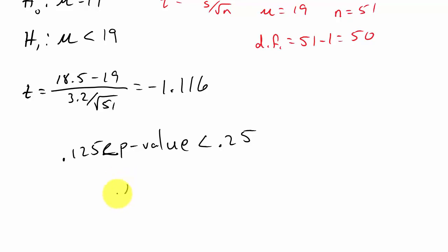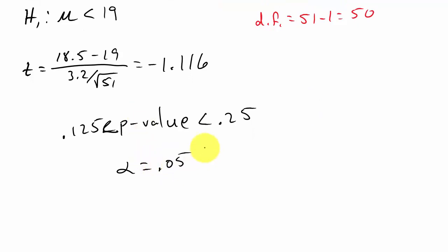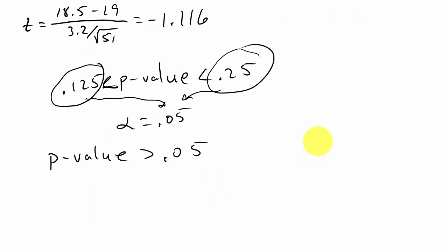Now our alpha equals 0.05. This 0.125 and this 0.25, well 0.125 is larger than 0.05, and 0.25 is also larger than 0.05. If our p-value is between these two values, then we know that our p-value is greater than 0.05. Since our p-value is greater than 0.05, we fail to reject H0, the null hypothesis.